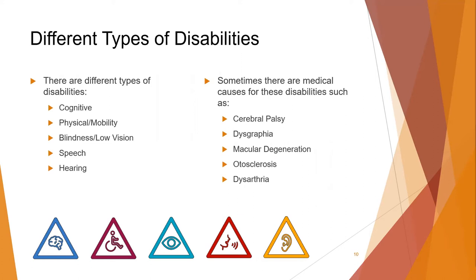Pictured on this slide are five equilateral triangles in differing colors. The first is blue with a line drawing of a brain, representing cognitive disabilities. The second is purple with a person in a wheelchair, representing physical or mobility disabilities. The third is teal with an eye, representing blindness or low vision. The fourth is red with a person speaking, representing speech disabilities. The last is yellow with an ear, representing hearing impairments. Together, these triangles without the drawings make the logo used for the project.